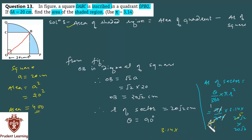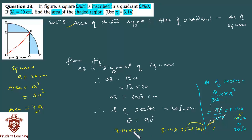3.14 × 5√2 × 20√2: √2 × √2 = 2, 5 × 2 = 10, 10 × 20 = 200. तो आपके पास बचेगा 3.14 × 200. 3.14 × 2 = 6.28, × 100 = 628. तो आपके पास sector का area = 628 cm².